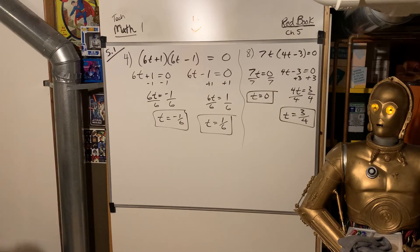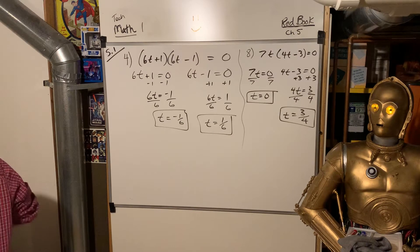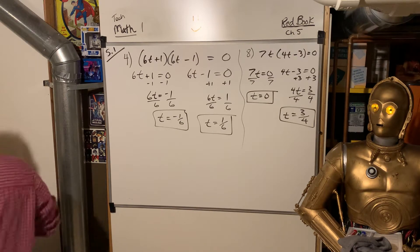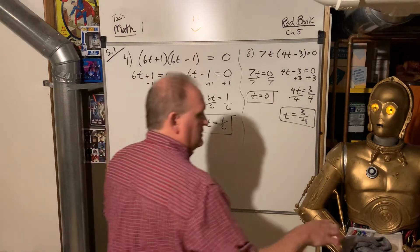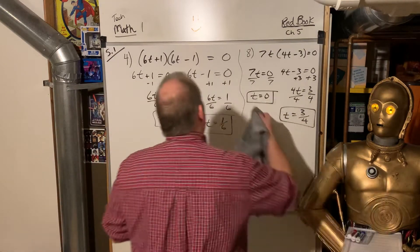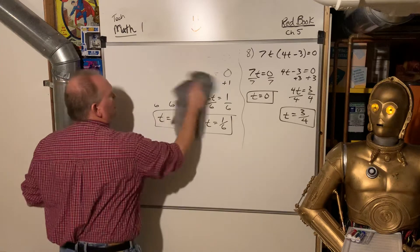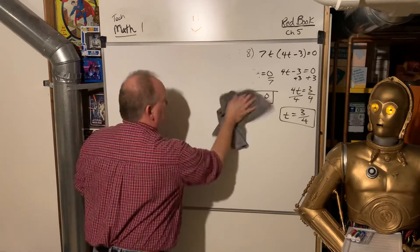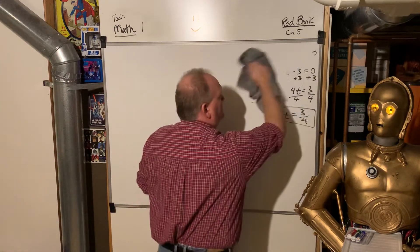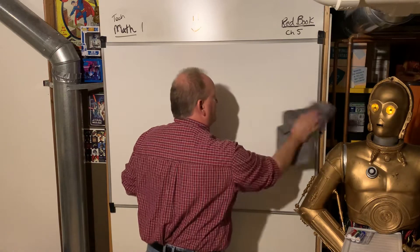It's pretty straightforward how to do these problems. Now, these were already both factored for us. So let's look at Section 5.2, where they give us one that isn't factored. In 5.2 we are going to have to factor and solve — we'll do the factoring first, like what we did in Chapter 4.